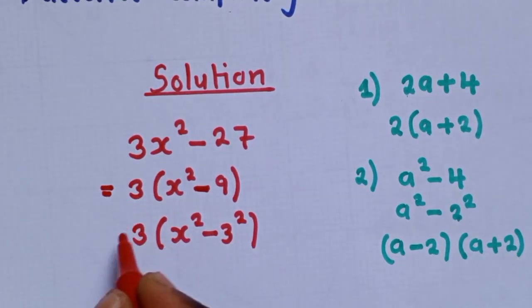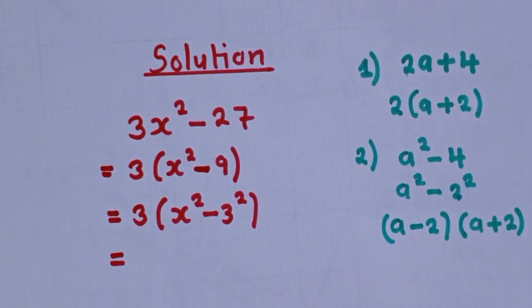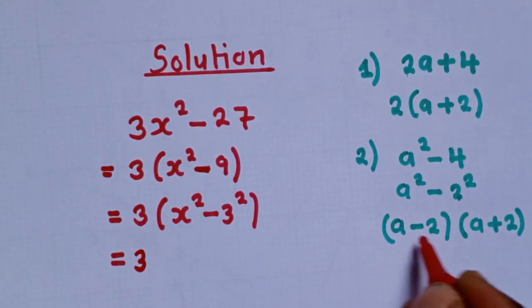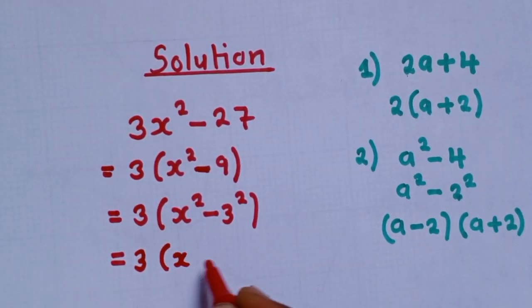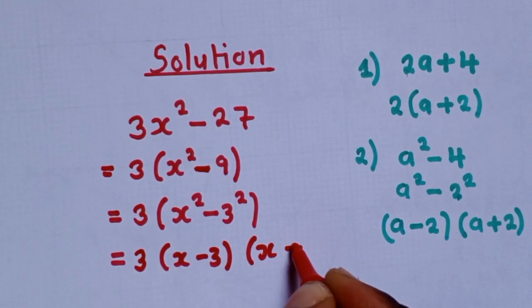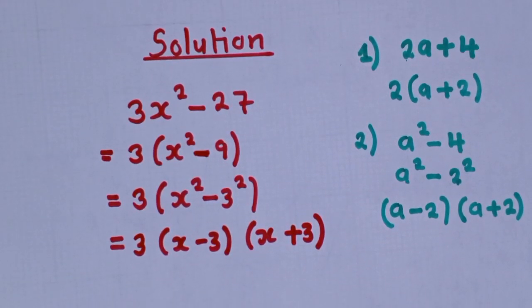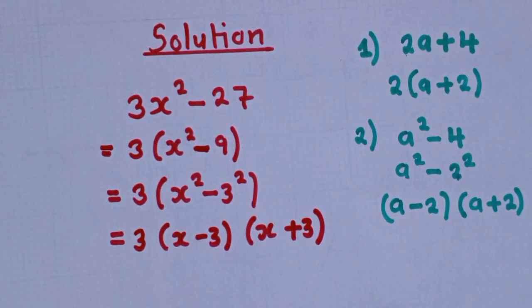Thereafter, we can now do the last part here. So we write x minus 3, x plus 3. So this is how you factorize using difference of two squares.